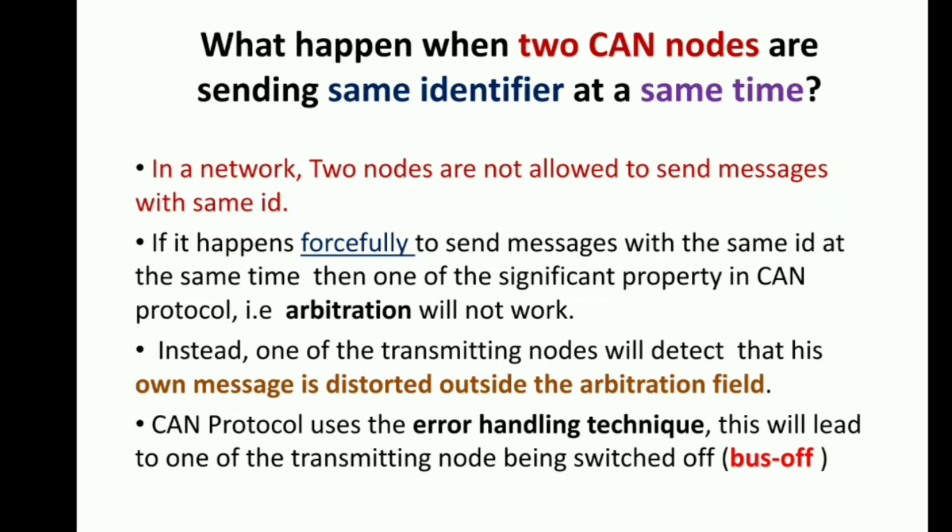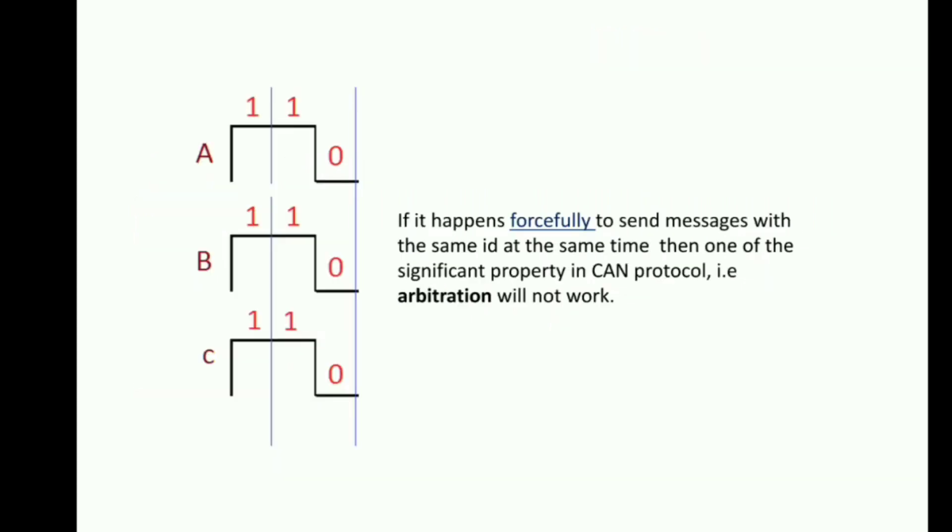It will be really helpful to understand still better. So let's see, here we have three nodes A, B, C. These three nodes, if you see, node A and node B are transmitting the same ID, right, the same message. But C is giving a different ID.